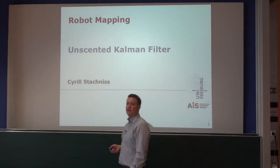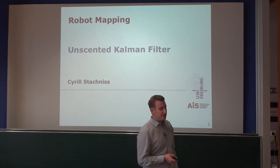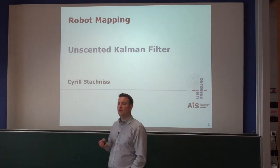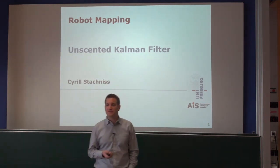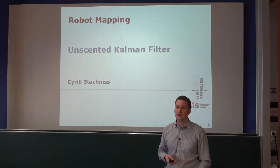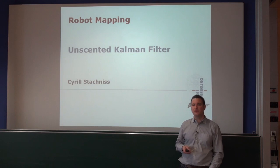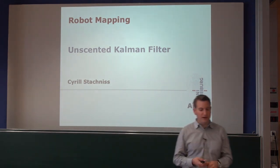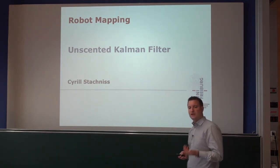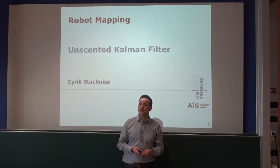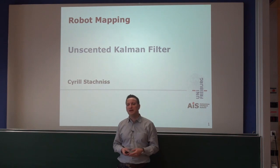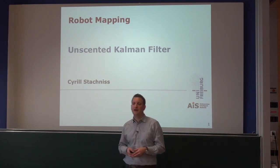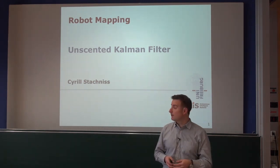I would like to start today with another family member of the Kalman filter. We have looked so far into the Kalman filter and the extended Kalman filter as two estimation techniques for doing recursive Bayesian filtering in the presence of Gaussian distributions and linear or well-linearizable models. What we will look into today is the unscented Kalman filter, which is an extension of the extended Kalman filter, mainly designed for situations where the linearization — the Taylor expansion — works sub-optimally.